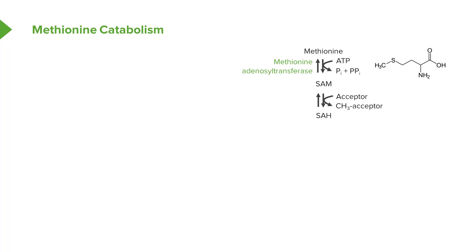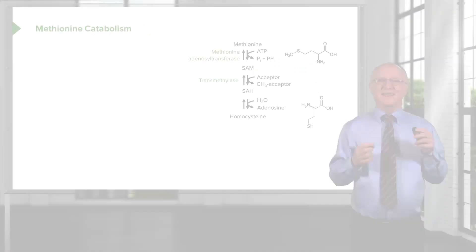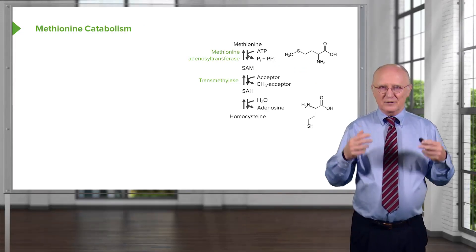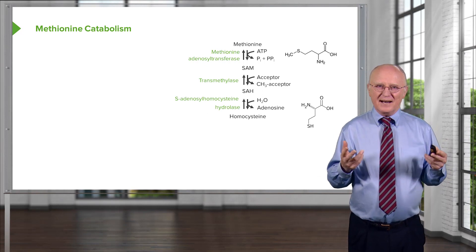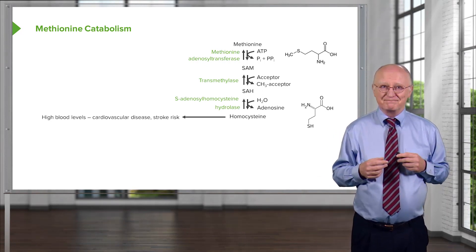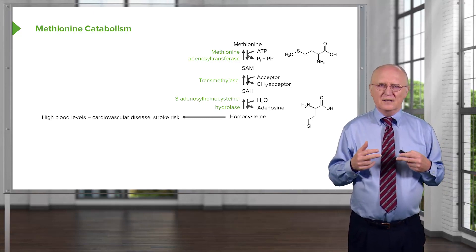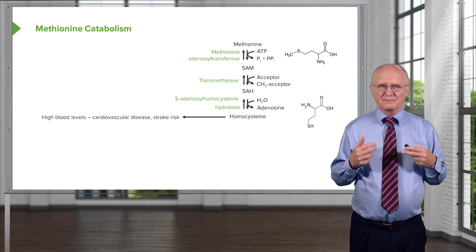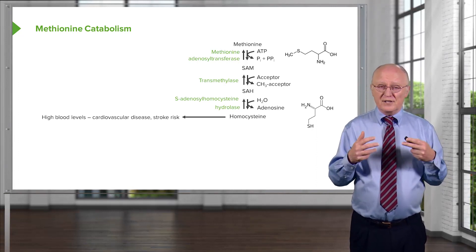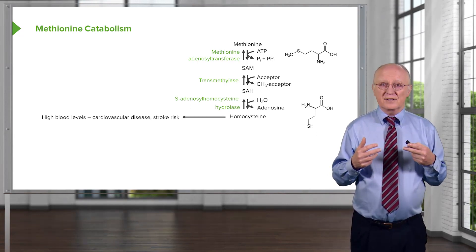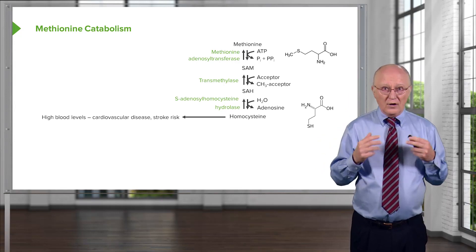This reaction involves the donation of a methyl group to something else — it's not going to make cysteine directly, but it's making an intermediate, S-adenosylhomocysteine, that will be used to make cysteine. The enzyme catalyzing this is transmethylase. In the next step, hydrolyzing S-adenosylhomocysteine to release the adenosine creates homocysteine, catalyzed by S-adenosylhomocysteine hydrolase. Homocysteine is an important molecule because high blood levels are related to cardiovascular disease and stroke risk, so physicians will measure this molecule as part of a health assessment.